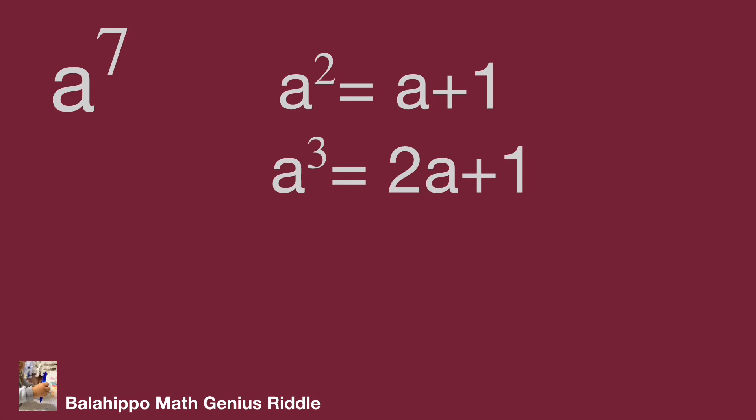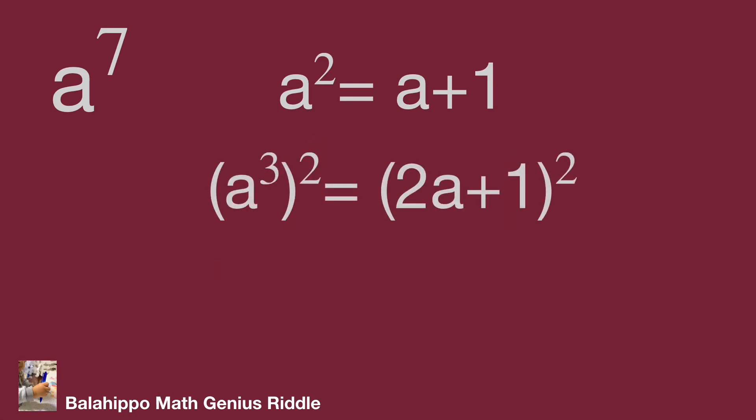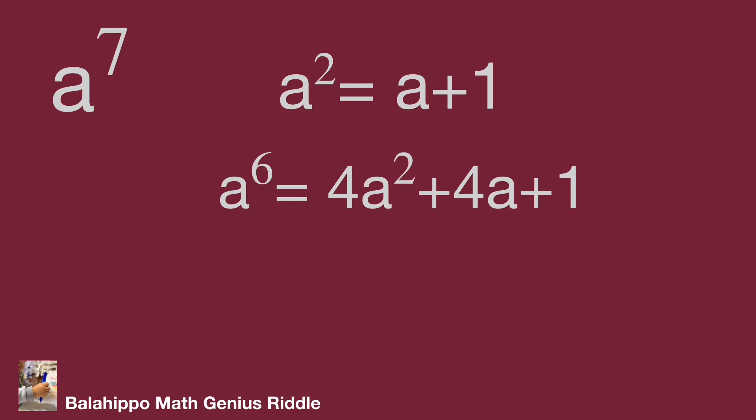To get a power of seven, we can go through a cubed squared to a squared squared to a power of six, then times a becomes a power of seven. So square a cubed, then develop this term as a power of six equal to four a squared plus four a plus one.